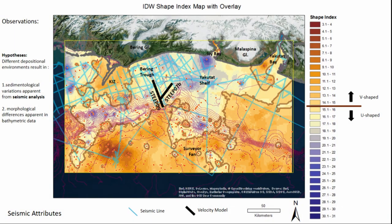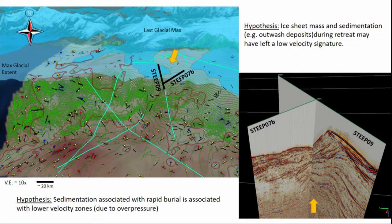Now we want to bring in the tomography story. We have a distribution of seismic lines, and I've run some tomography code on these. Our first hypothesis was that ice sheet mass and sedimentation during retreat may have left a low velocity signature — where low velocity would be associated with high fluid pressures, possibly due to deformation. Our second hypothesis is that sedimentation associated with rapid burial is associated with lower velocity zones.